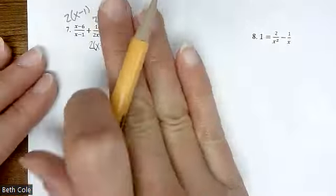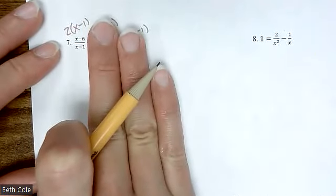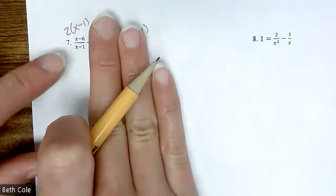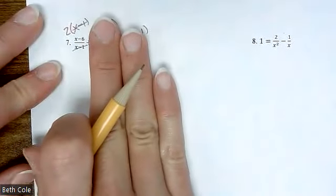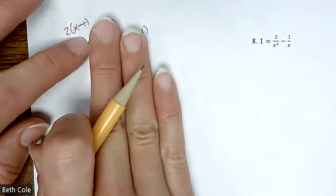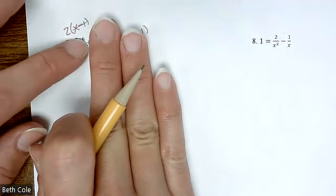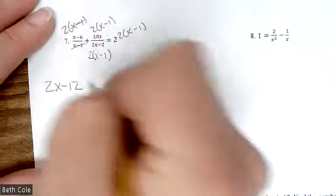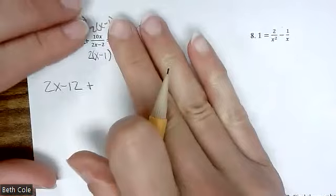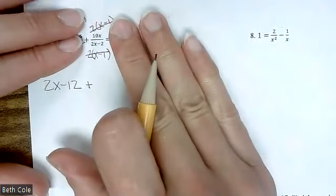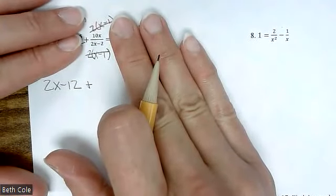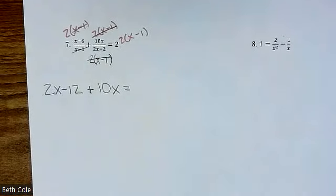Look at the first one. What's going to cancel? Those are gone. What's left is two times X minus six. What does that give us? Two X minus 12. Now when you look at the one in the middle, what's going to cancel? See, if we didn't put the two there, the twos wouldn't cancel. What's left? Ten X. Equals. Nothing cancels for that because there wasn't a fraction to start with — you have all of it. Two times two is four, and you have to distribute the four into the parentheses.